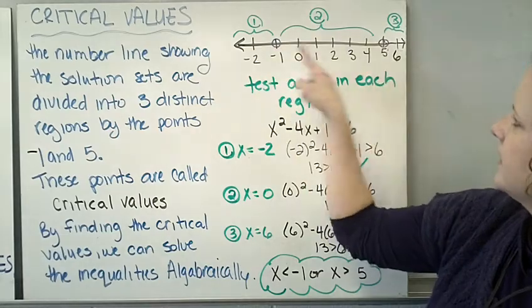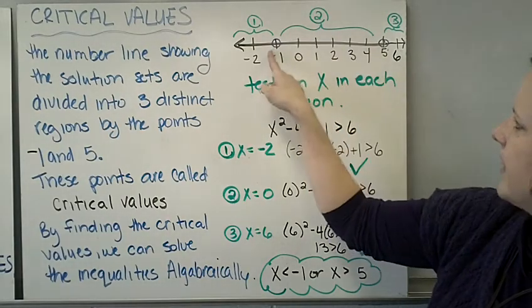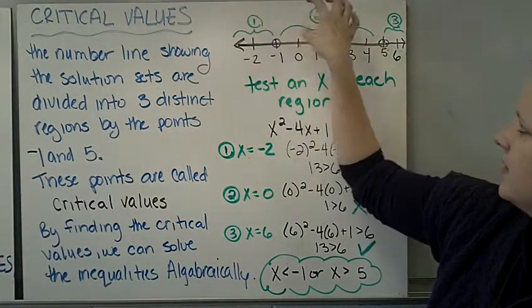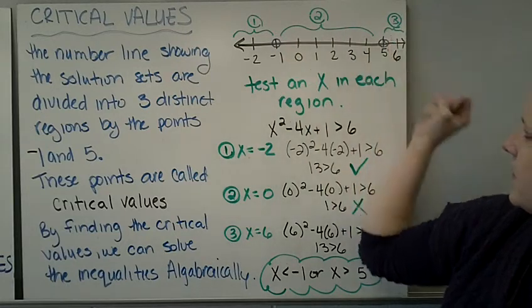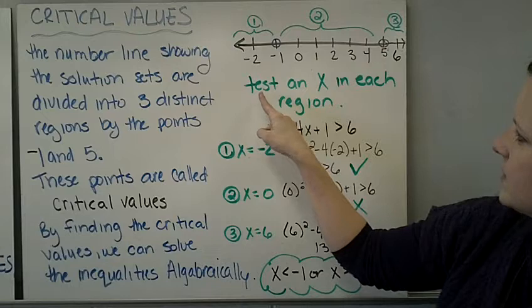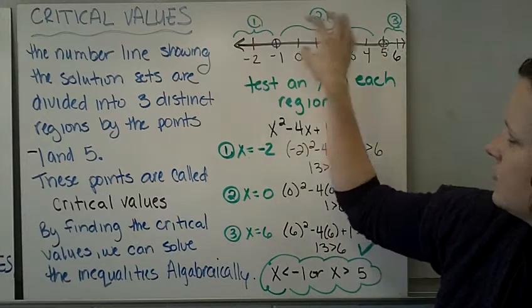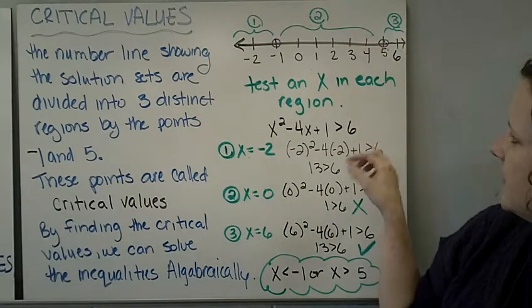So there's our number line, and those are our critical values. We have one, two, three regions split up with those critical values. We need to grab an x value in each region and test it.